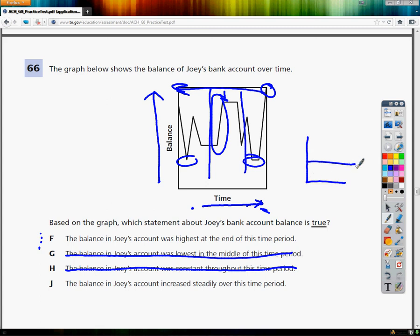And the last one, the balance in Joey's account increased steadily over this period. An increase would show that it goes up steadily, it would make like a nice line. His balance is all over the place, much like everyone else's.